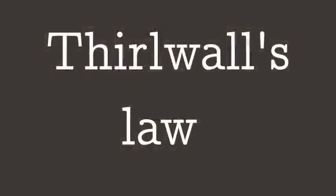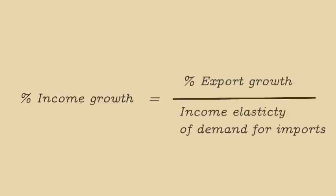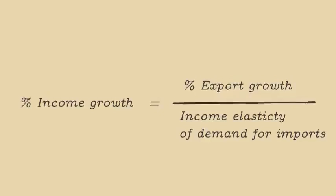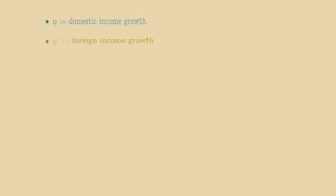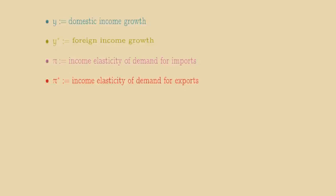Thirlwall's Law is the most common simple mathematical model used to synthesize and test this combination of theoretical beliefs. However, this set of theories, or a subset thereof, can be mathematized in many other ways. Thirlwall's Law just happens to be the most convenient and widely used. In this formula, we use growth rates, or percentage change rates, to describe the growth of domestic and foreign income, denoted by Y and Y*, and income elasticity to measure the responsiveness of imports and export demand to changes in income. Pi (π) measures the responsiveness of import demand to changes in domestic income, and pi star (π*) measures the responsiveness of export demand to changes in foreign income. Putting all these terms together: domestic income growth is equal to foreign income growth times the income elasticity of demand for exports over the income elasticity of demand for imports.